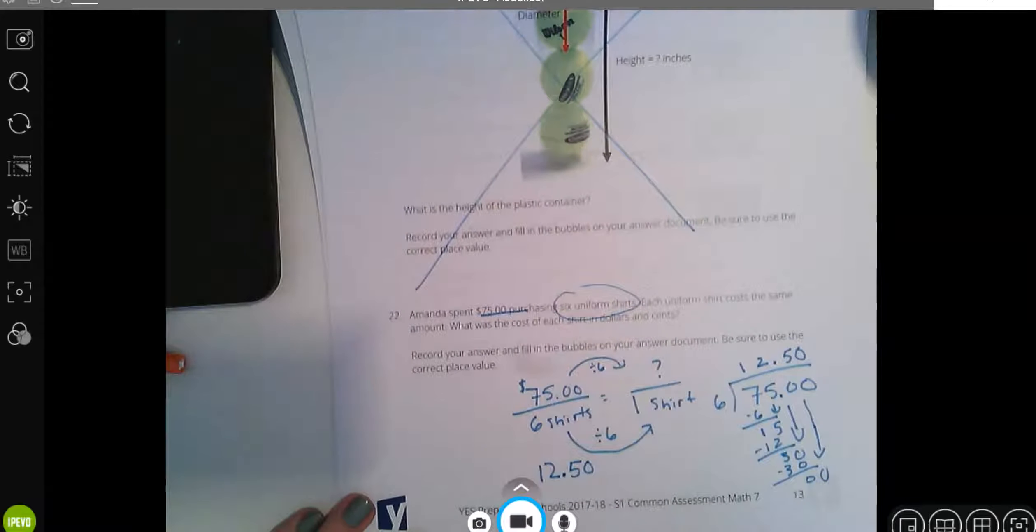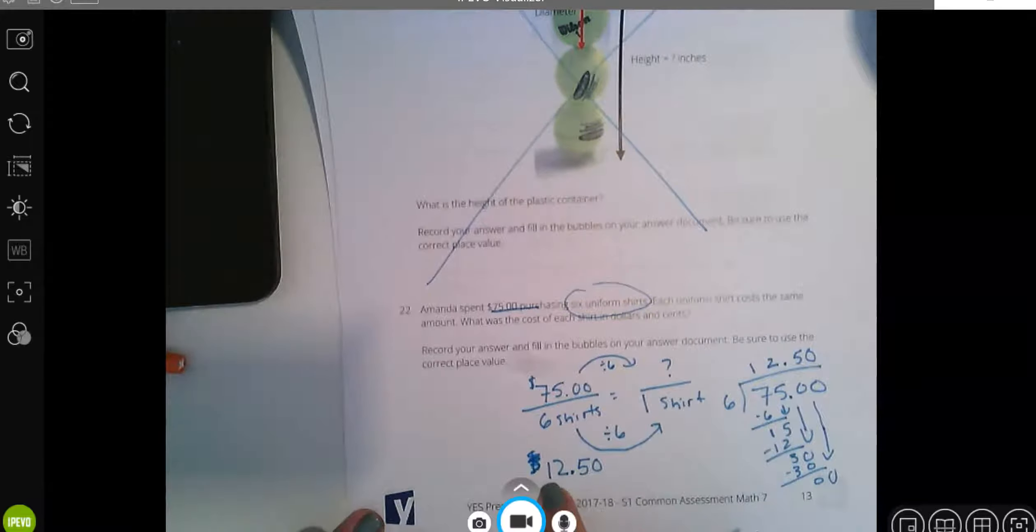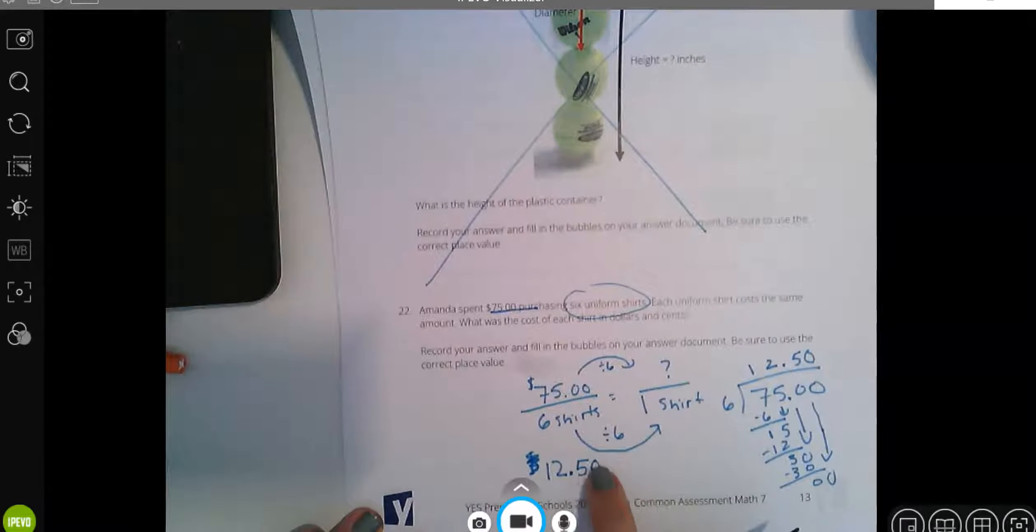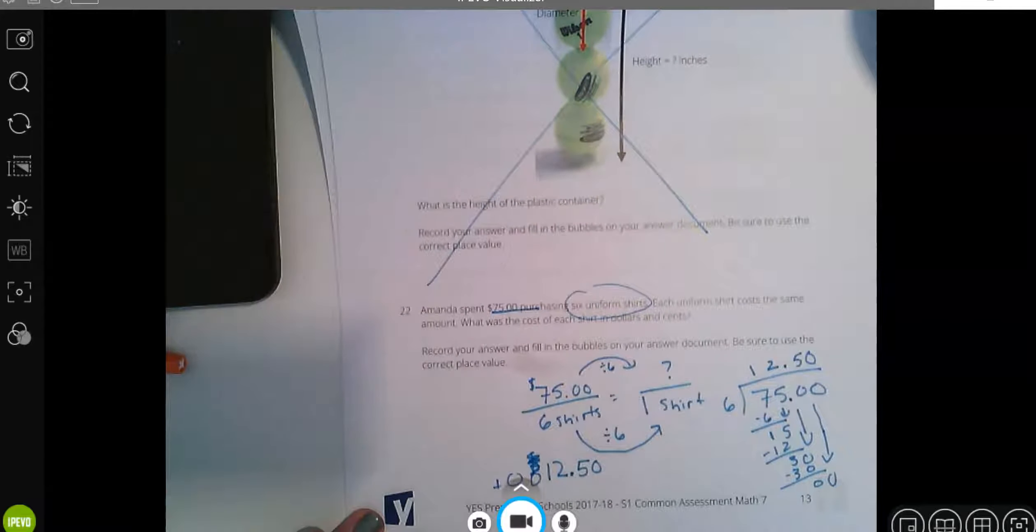So our answer would be 12.50. Since this is a griddable we do not include unit symbols in our griddable answer. If this was a free response you'd totally have to add that dollar sign to get credit. But the focus of a griddable is to make sure that you put the decimal where it's supposed to be. You put the 5 and 0 in the tenths place, the 2 in the ones place and the 1 in the tens place. This is the number that would get you the correct answer.